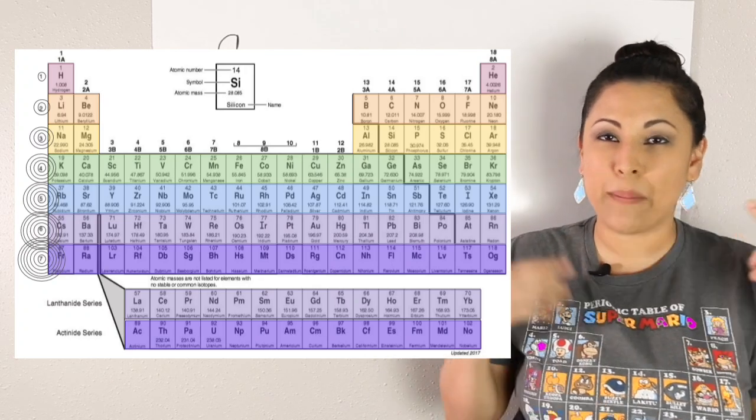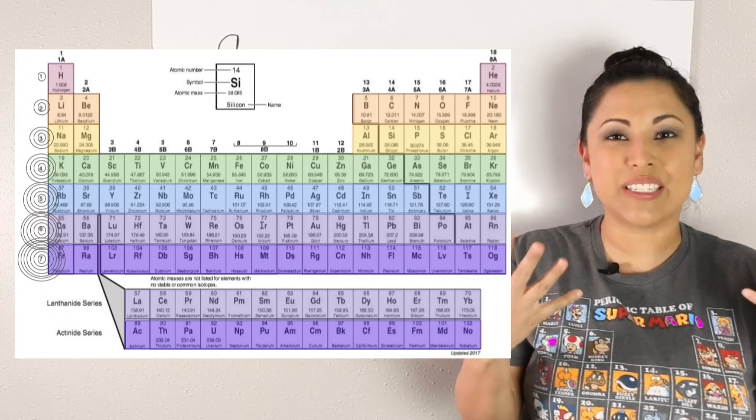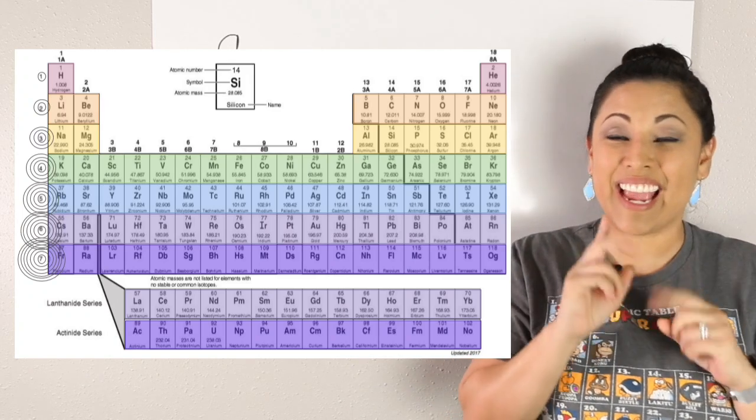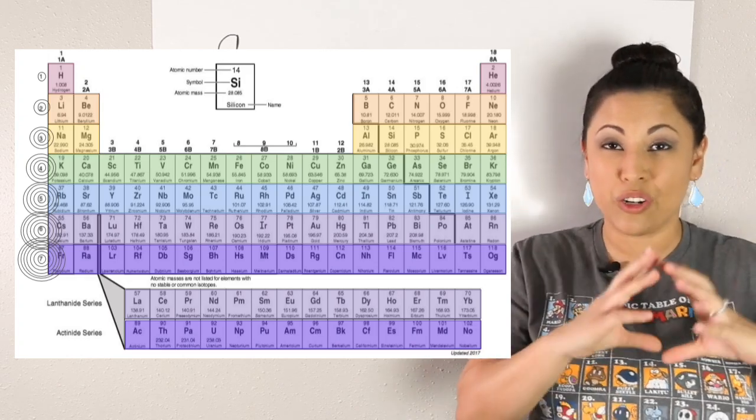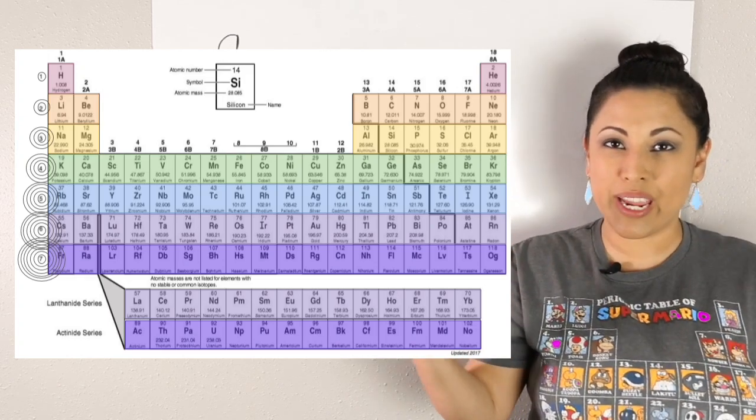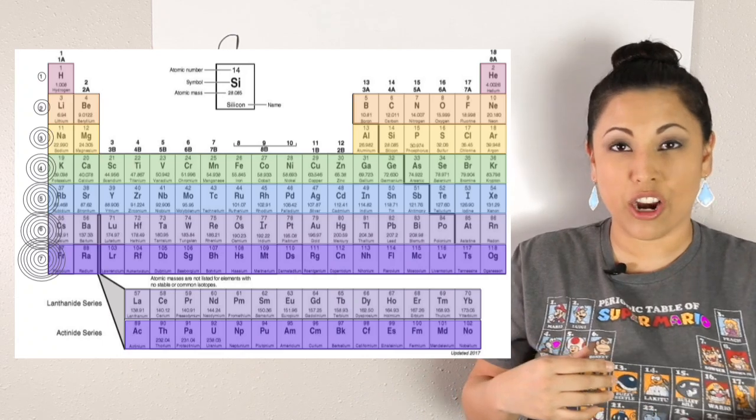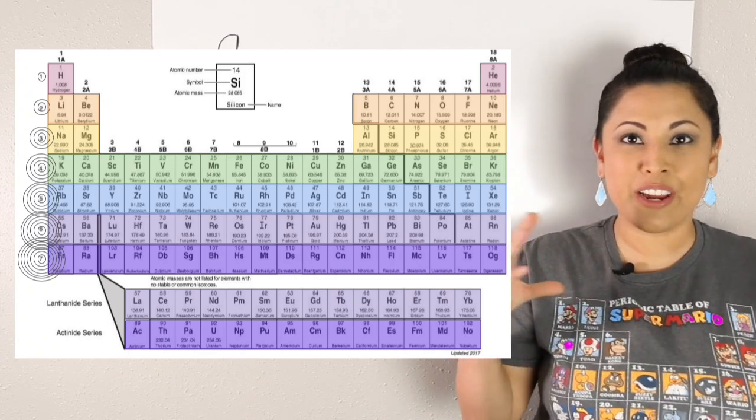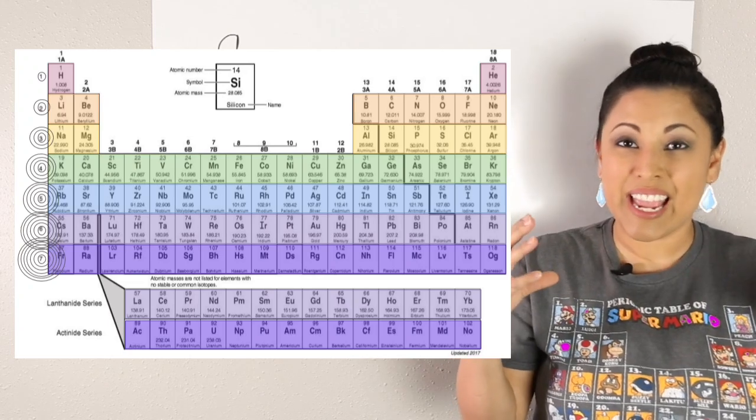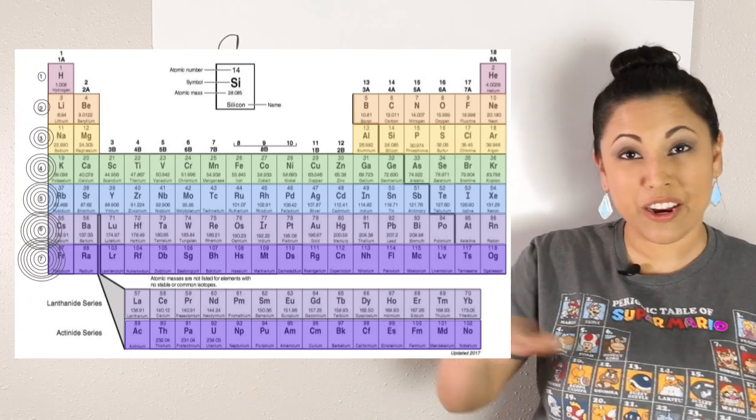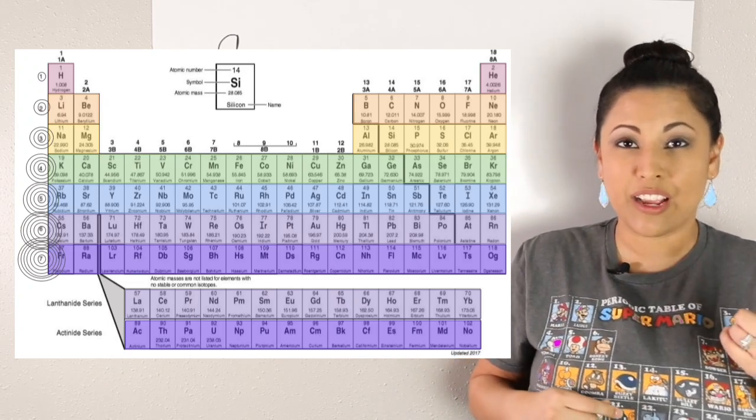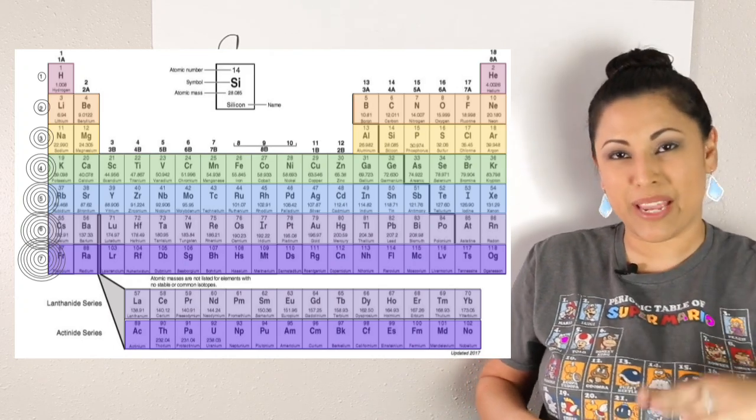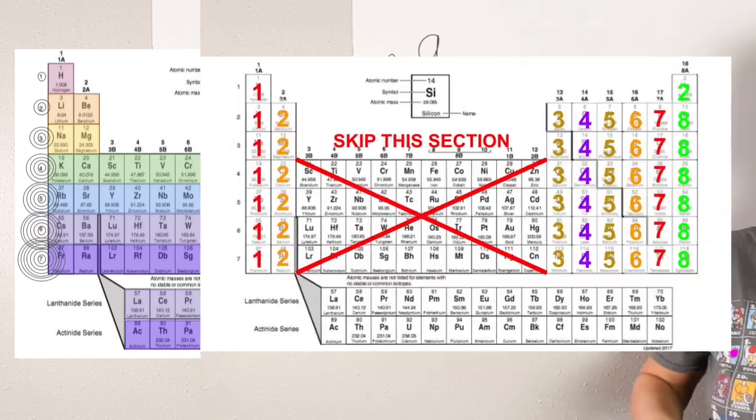Now, if you go down to period two, how many rings or energy levels does period two have? Exactly, it has two. Keep going down. You'll notice they add one ring as the periods get larger, all the way up to period seven. Period seven has seven rings. It is also the largest period. You can also take a closer look at the mass of those atoms and notice that they also get bigger as you go down the periodic table.